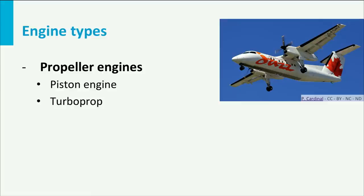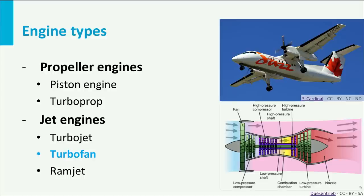The second main engine type is the jet engine. The airflow flows through the engine, it is compressed, mixed with fuel, and there is continuous combustion of the mixture. Beyond the combustion area is the turbine where the air expands and power is generated. Part of that power is used to drive the compressor.